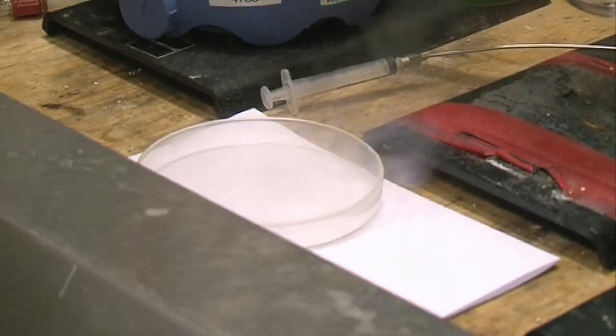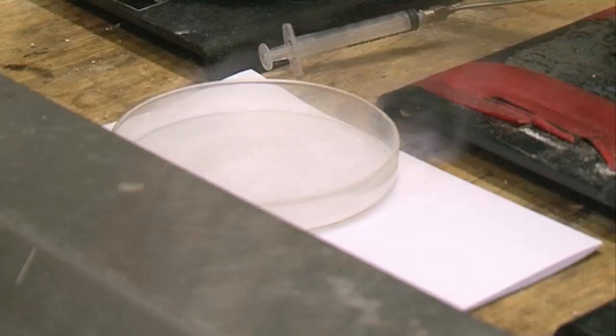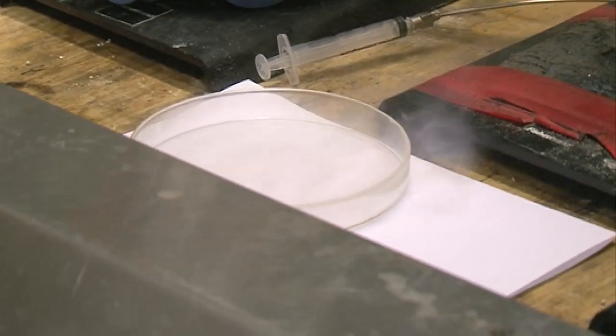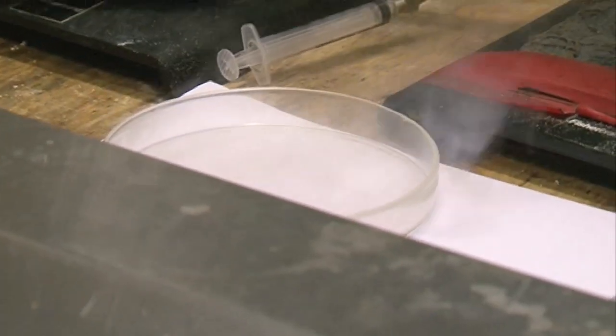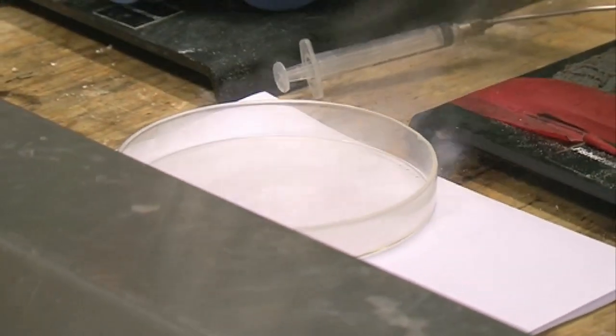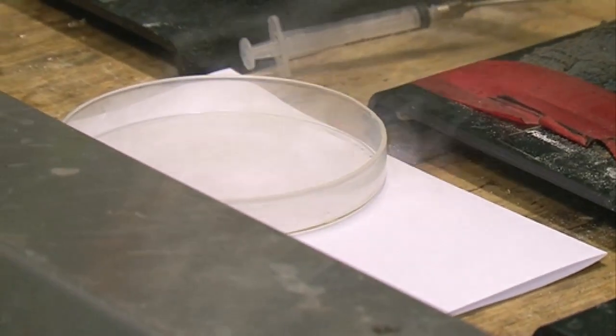But HBr gas, this is why boron tribromide is a toxic chemical. It's because HBr gas, what it gives off as well, is also toxic. So this is why we're using a fume cupboard, because it's not a very good thing to breathe in at all.